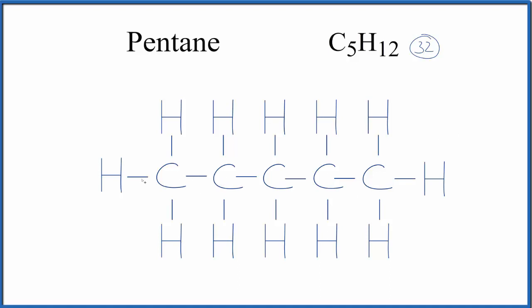If you count up all of these pairs of electrons, you'll end up with 32. That's how many valence electrons we have for pentane, the Lewis structure here. You'll also notice that each carbon is bonded to four things, either hydrogens or carbons. So this is the Lewis structure for pentane.